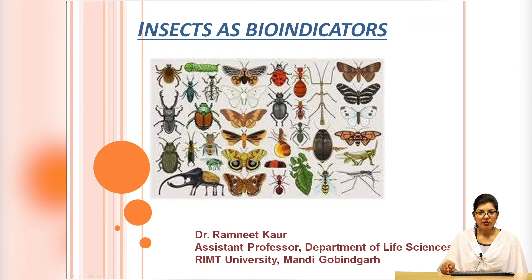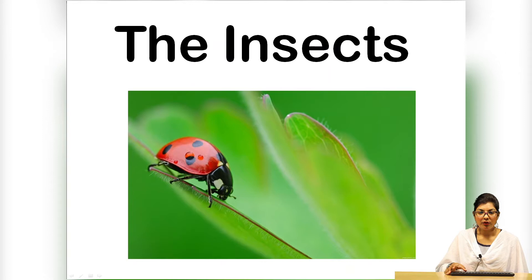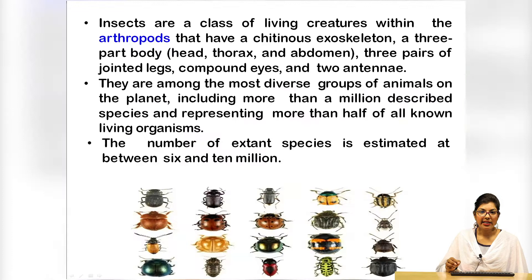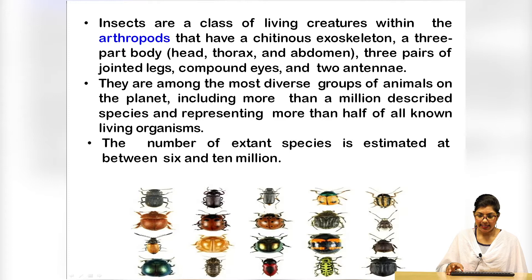Before starting, we must know what insects basically are. Insects are a class of living creatures within the arthropods that have a cutaneous exoskeleton, a three-body part consisting of head, thorax and abdomen, three pairs of jointed legs, compound eyes and two antennae. They are among the most diverse group of animals on the planet, including more than a million described species and representing more than half of all known living organisms. The number of extant species is estimated at between six and ten million.